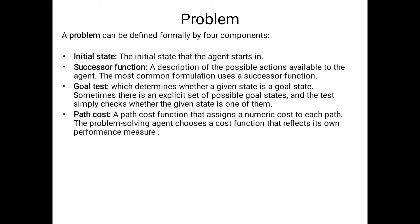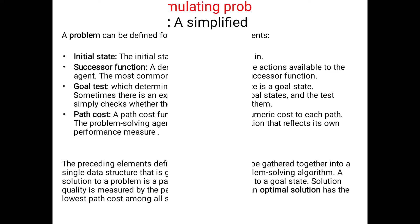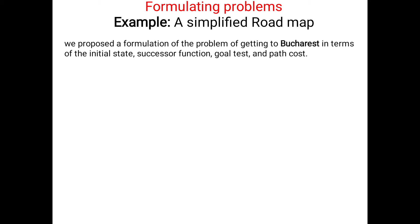For algorithms like Prim's or Kruskal's, the path cost is the weight available on the edges from one source to another. For games like chess, we count the number of moves as path cost. We also consider the optimal solution — the best solution — from among the many possible solutions available for every problem.